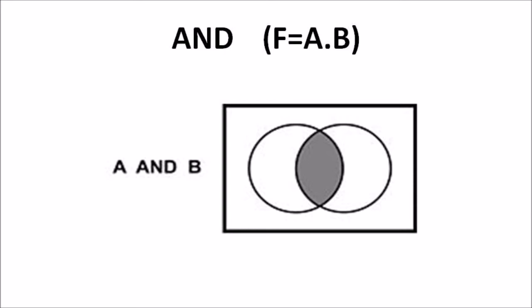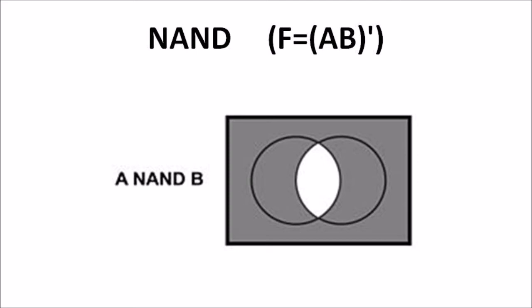Next we consider the NAND gate, where f equals A dot B, whole bar. The NAND gate is an electronic circuit with two or more inputs that produces only one output. It is a combination of AND and NOT gate, producing output zero when all inputs are one, otherwise output is one. The Venn diagram of the NAND gate is just the opposite of the AND gate — except for the common overlapped area, the rest of the shaded areas are considered, representing A NAND B or A intersection B, whole bar.